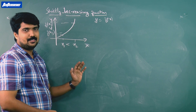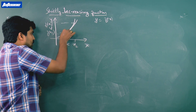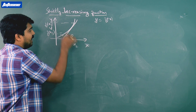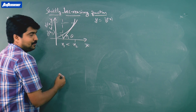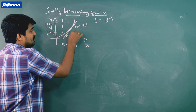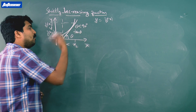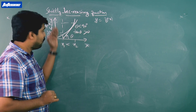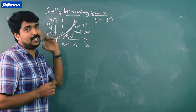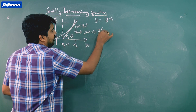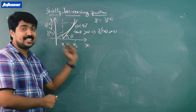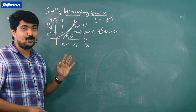What is the application of derivative here? If you draw a tangent to the curve at any point, the angle will be less than 90 degrees. So theta is always less than 90 degrees. That means the slope of the tangent, tan theta, is always positive — greater than 0. For an acute angle, tan theta is always positive. That means the slope of the tangent, dy/dx, f'(x), is greater than 0 for a strictly increasing function.